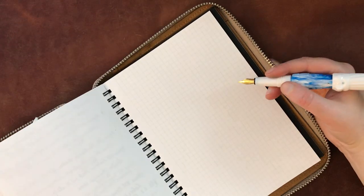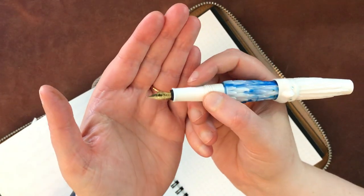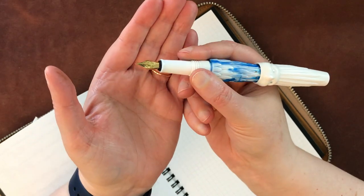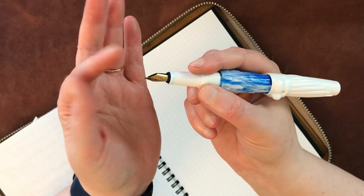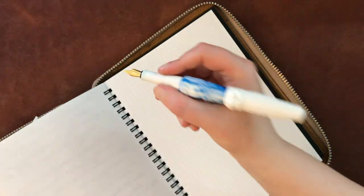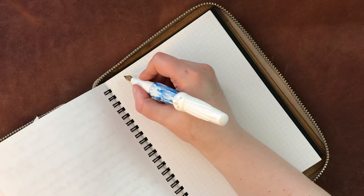But let's go ahead and do a writing sample with this. It does have a smaller nib. Some of the larger Bennu pens have a size six nib. This is a size five nib, but it writes quite well, I think. I'm going to zoom in a little bit.